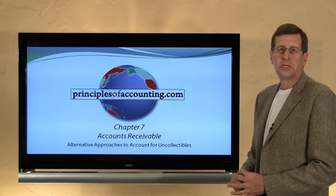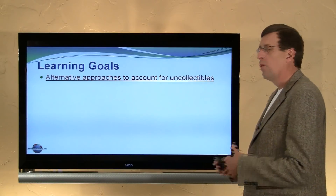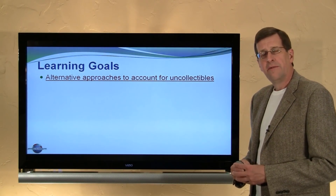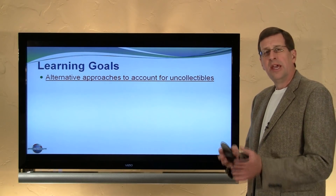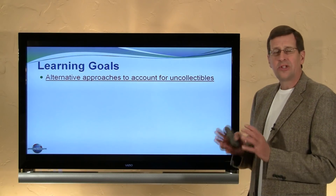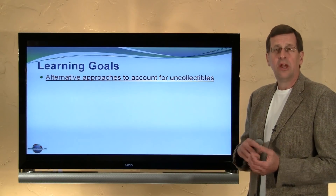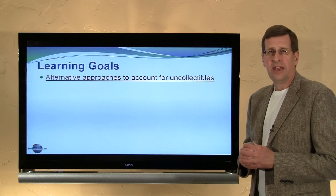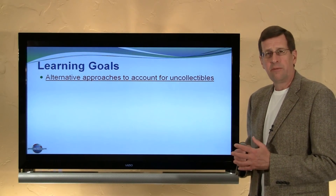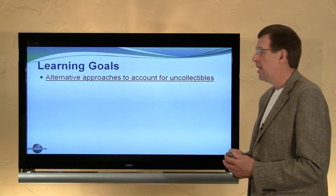I'm Larry Walther. This is Principles of Accounting.com, Chapter 7. In this module, we will look at alternative approaches to applying the allowance method for accounting for uncollectible accounts. In the previous module, we compared and contrasted the direct write-off method and allowance methods without really looking at the mechanics of allowance methods. It was pointed out that the allowance methods are required under generally accepted accounting principles because of their better matching and better conceptual underpinnings.